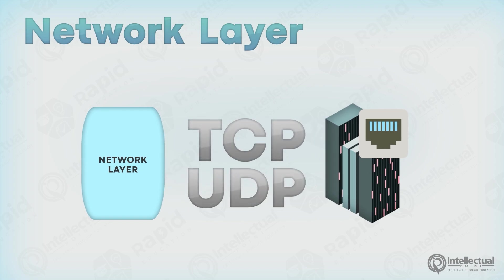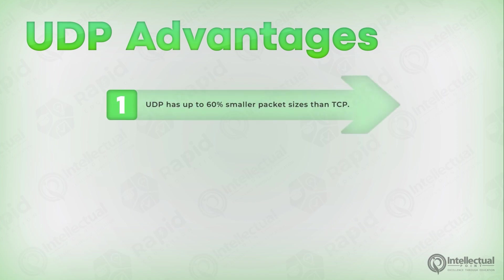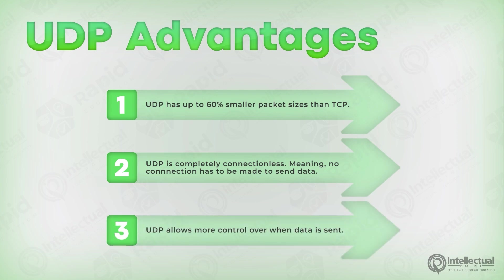TCP and UDP are the most common transport protocols, and they both have their own characteristics and uses. To start off, we'll look at UDP and its advantages. Nearly the biggest advantage of UDP is its small packet sizes — UDP's packet sizes are up to 60% smaller than TCP's. Additionally, UDP is completely connectionless, meaning no connection has to be made to be able to send data, unlike TCP. UDP also allows more control over when the data is sent.